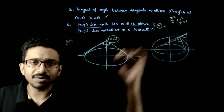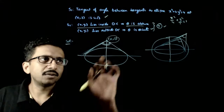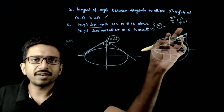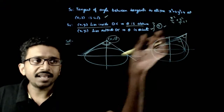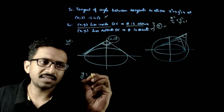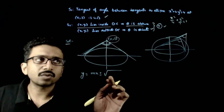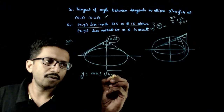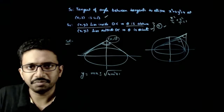The second statement is true. Now let us look at the first statement. For the ellipse x²/4 + y²/1 = 1, let us take a general tangent. The general tangent to this ellipse is y = mx ± √(a²m² + b²), which here becomes y = mx ± √(4m² + 1).